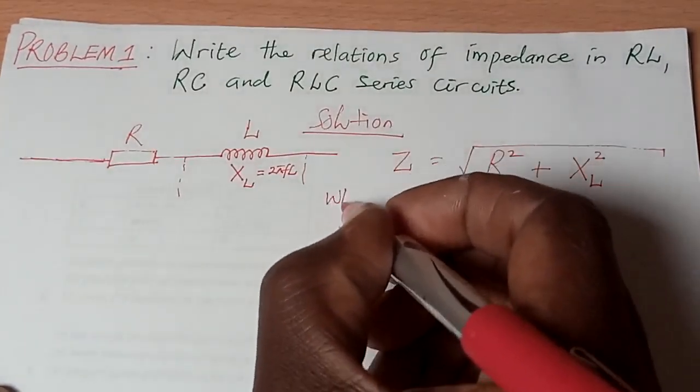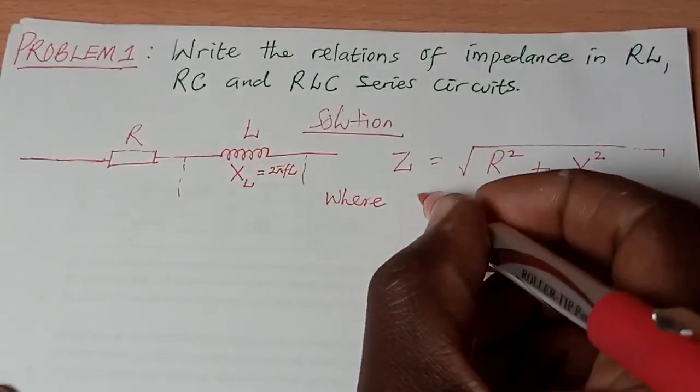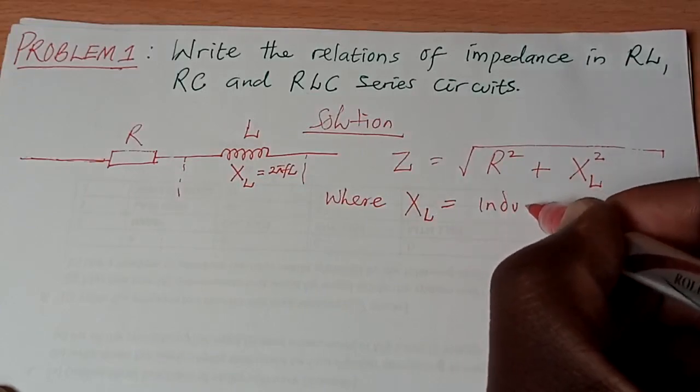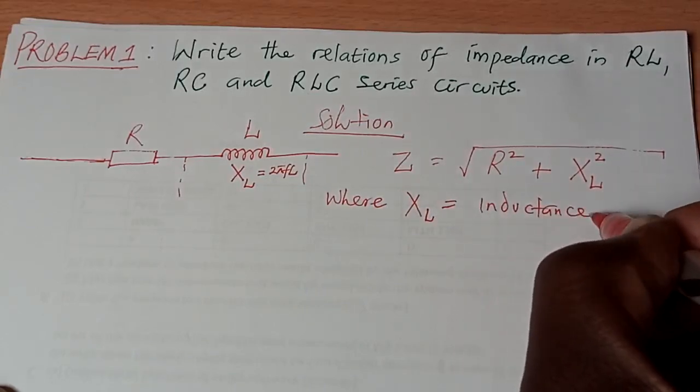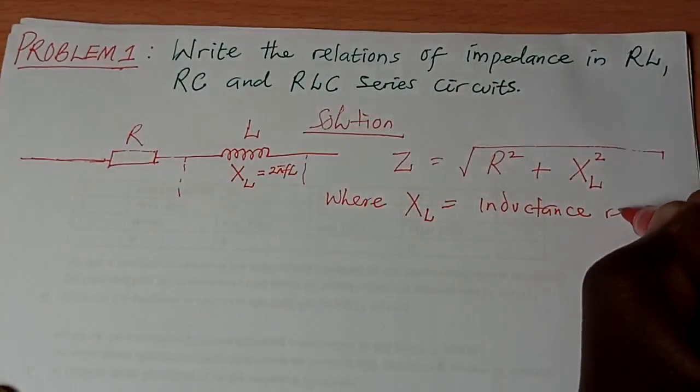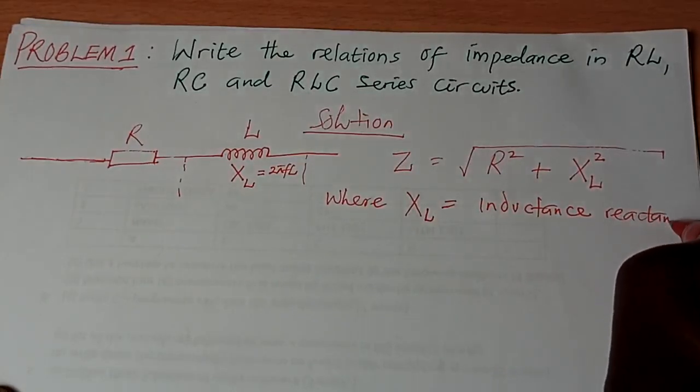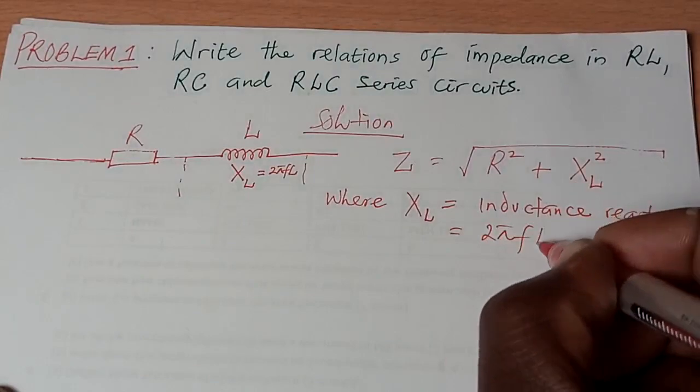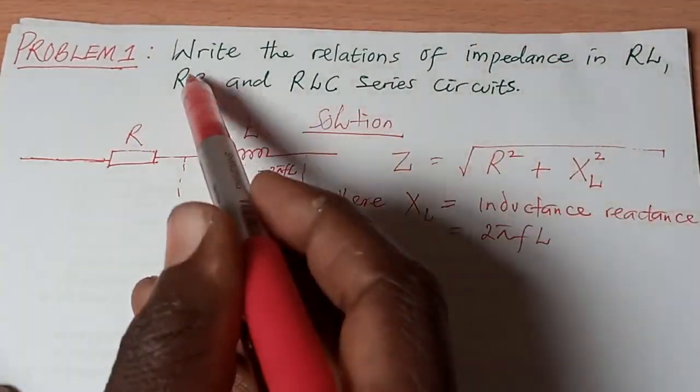So we say where this X sub L is called inductive reactance. The resistance of the inductor is called inductive reactance. And the formula for it is 2 pi F L. That is, you are done with this one.